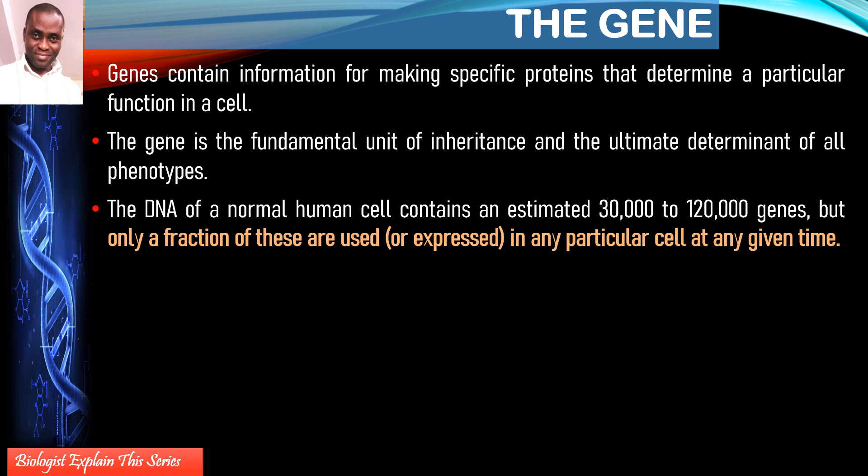Mutations are significant because when you alter the base sequence of a gene, you get a different phenotype. For example, look at an albino. Genetic disorders like sickle cell anemia, spina bifida, phenylketonuria, Down syndrome, and albinism are all caused by mutation — all because of an alteration to the sequence of bases that make up a gene.